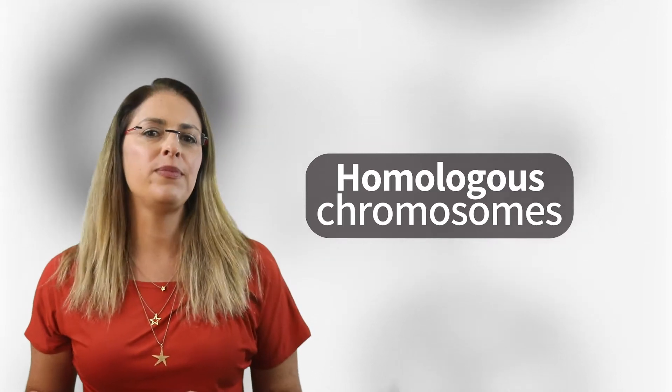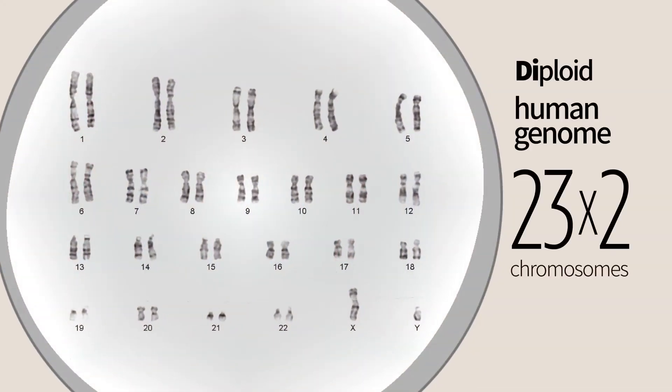The diploid set consists of two complete haploid sets. Chromosome 1 from the father and chromosome 1 from the mother. Chromosome 2 from the father and chromosome 2 from the mother, and so on and so forth.